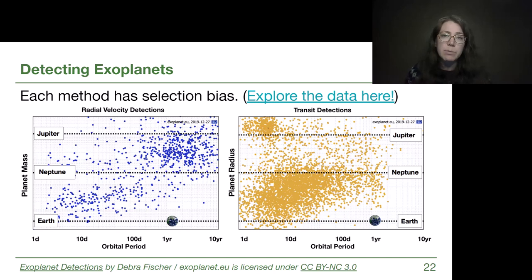Now each of these methods has its own biases and I invite you to explore the data that's being posted here. It's a clickable link in our shared slides. On the left we are showing some radial velocity detections up through 2019 and we're plotting planet mass as a function of orbital period because the radial velocity method can only tell us mass initially and then we have to do follow-up observations of a different type.